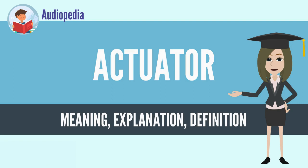An actuator requires a control signal and a source of energy. The control signal is relatively low energy and may be electric voltage or current, pneumatic or hydraulic pressure, or even human power. Its main energy source may be an electric current, hydraulic fluid pressure, or pneumatic pressure.